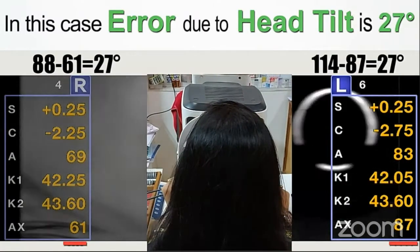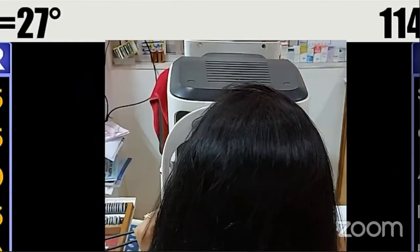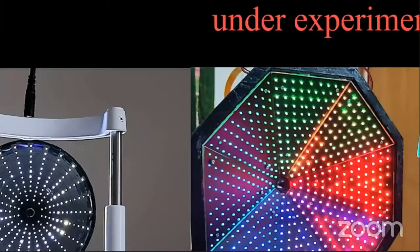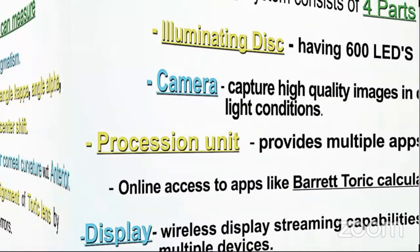The new version has 600 LEDs. The system consists of four parts: an illuminating disc with 600 LEDs, a camera to capture high-quality images in different light conditions, a processing unit providing multiple apps, and online access to apps like the Barrett Toric calculator with wireless display streaming capabilities to multiple devices.